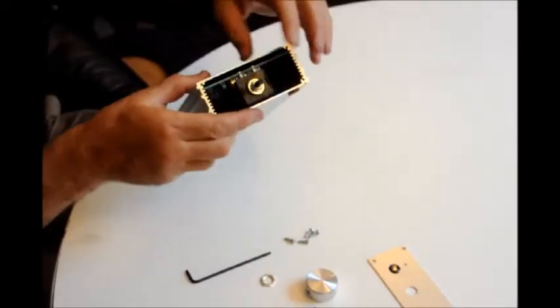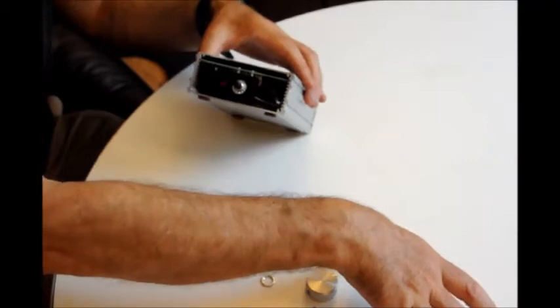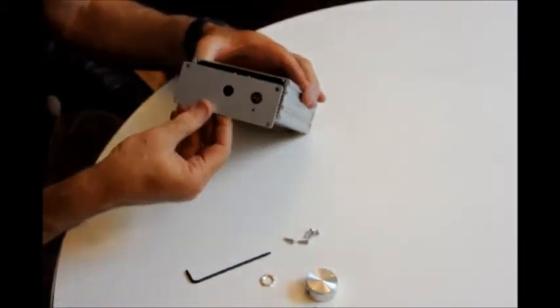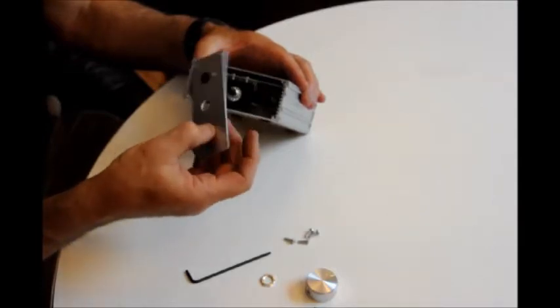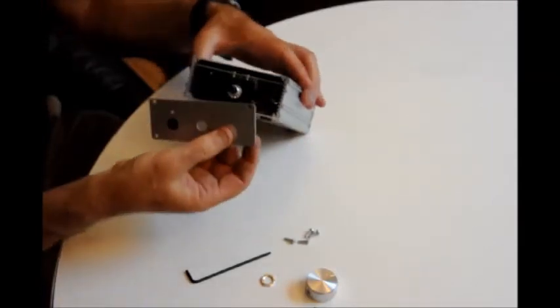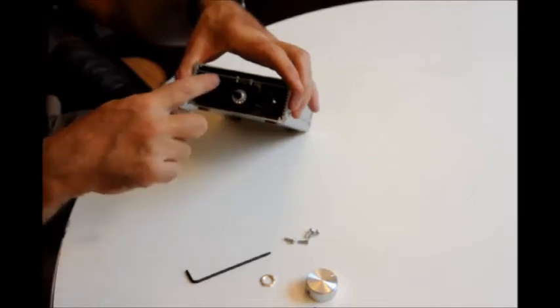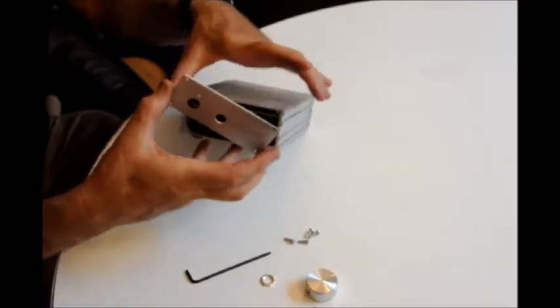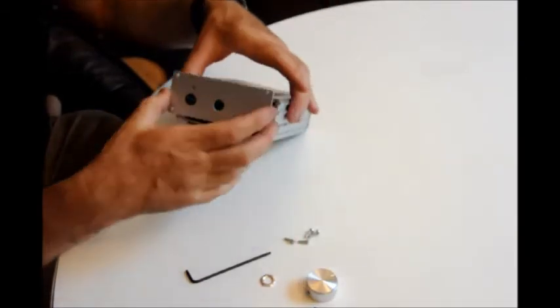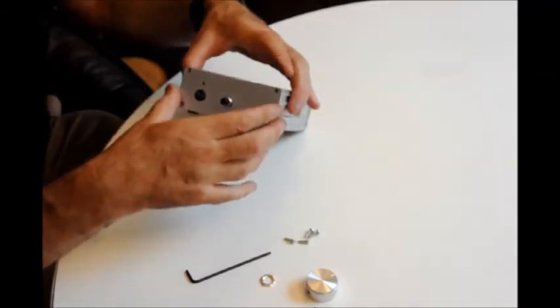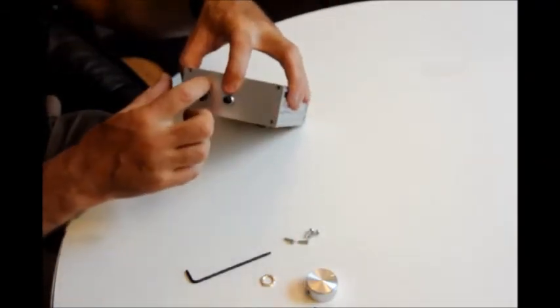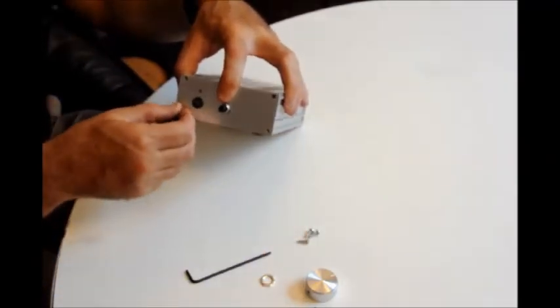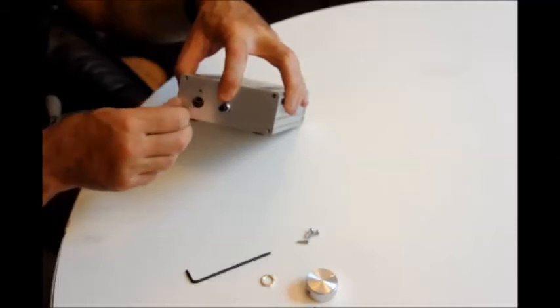So all we need to do now is reattach the front panel. Again, it's easy to get it the wrong way up, but just make sure that the hole for the LED, that's the green LED which you can see here, is in the right place here. If you just copy exactly what's shown on the video, you can't go wrong. So we simply pop that on. The green LED we can just feel poking through the front panel. Reattach the screws again.